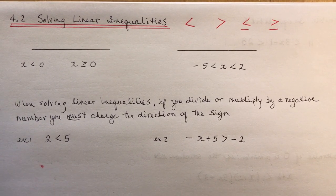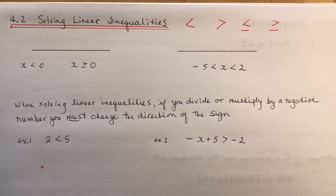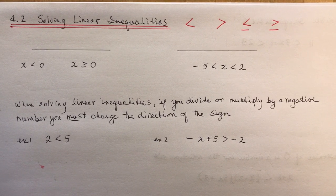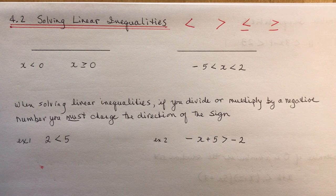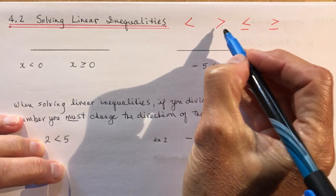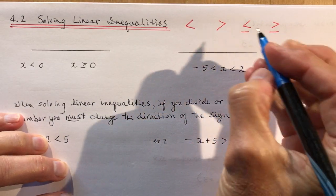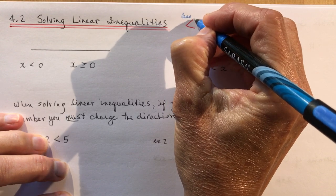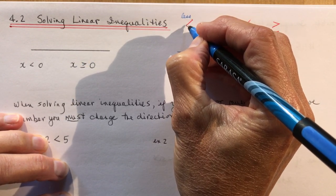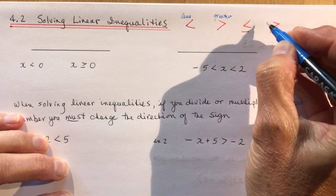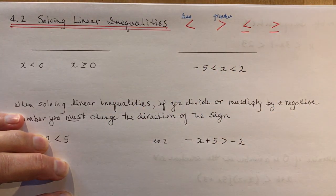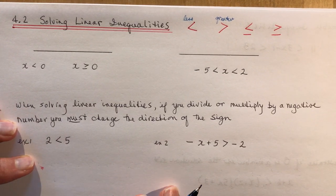4.2 Solving linear inequalities. You need a little refresher on what an inequality is. An equality means where it is equal; an inequality means where it could be less than, greater than, less than or equal to, or greater than or equal to. Hopefully you know these signs — less than is smaller on this side, greater than is the opposite, and then less than or equal to and greater than or equal to.